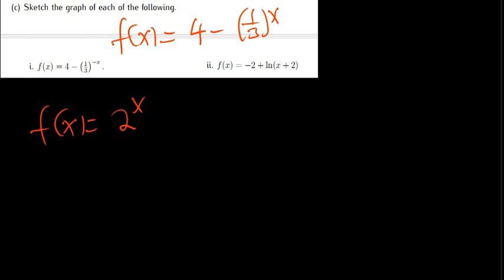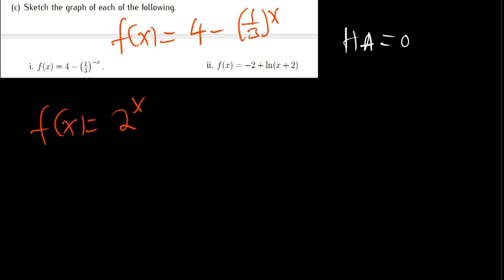The first thing is to identify the horizontal asymptote. The horizontal asymptote is the number without an exponential. For f(x) = 2^x, there is no added number, so the horizontal asymptote is 0. The number can appear in front of or after the exponential. In our main question, that number is 4, so the horizontal asymptote is 4.